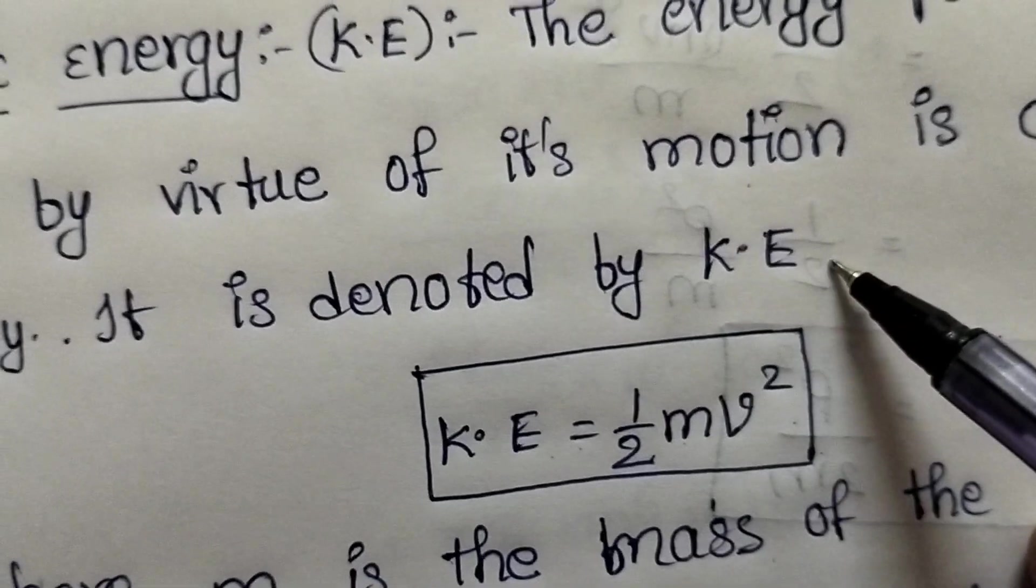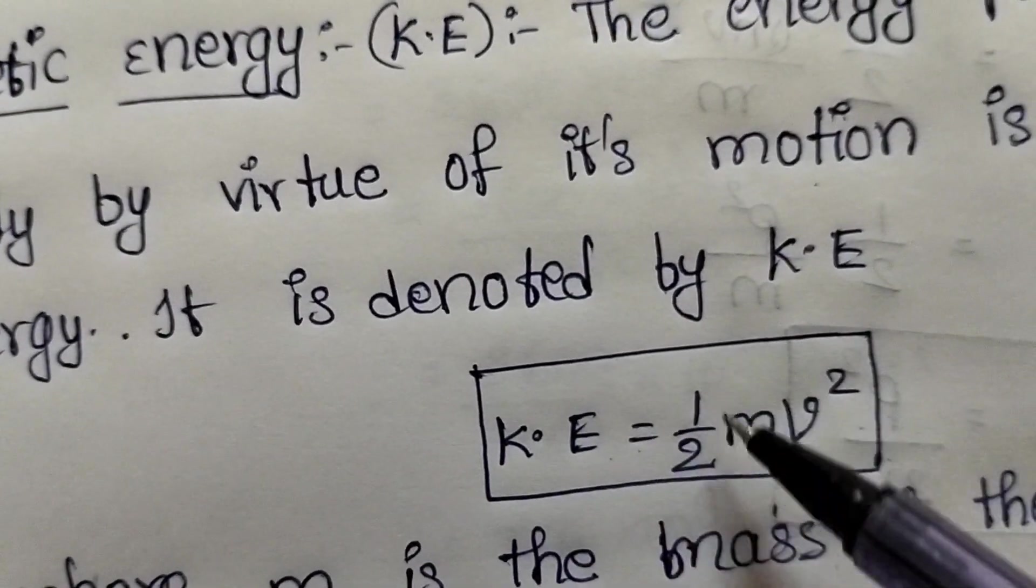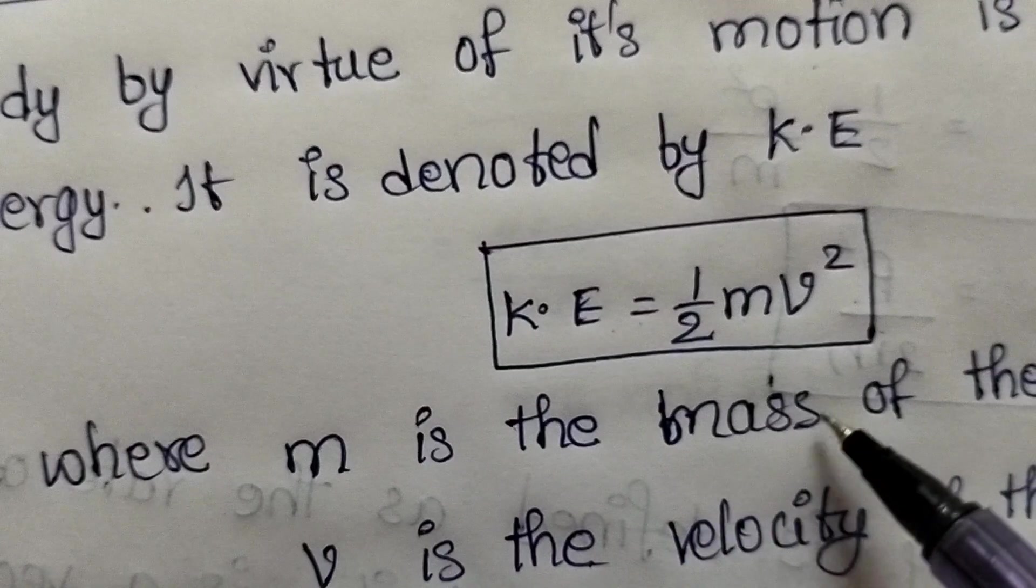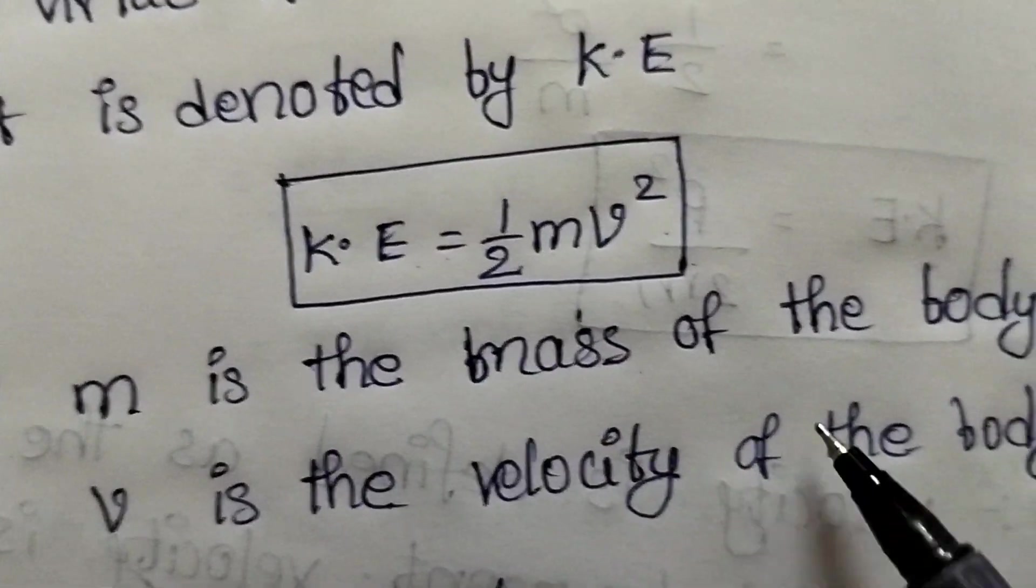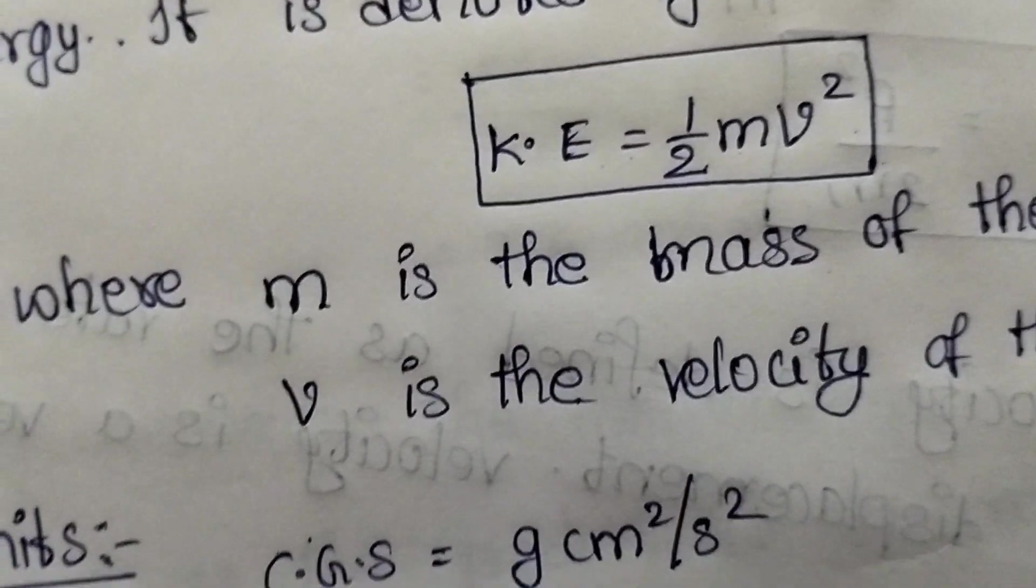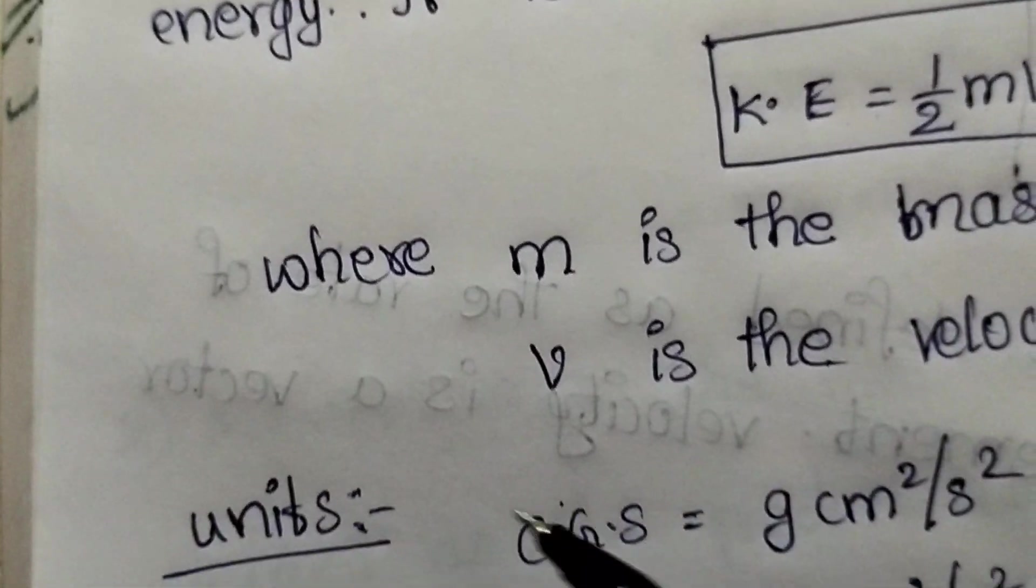It is denoted by K.E. K equals half mv square, where m is the mass of the body, v is the velocity of the body. See what are the units of kinetic energy.